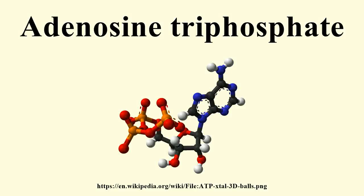Adenosine triphosphate is a nucleoside triphosphate used in cells as a coenzyme, often called the molecular unit of currency of intracellular energy transfer. ATP transports chemical energy within cells for metabolism. It is one of the end products of photophosphorylation, cellular respiration, and fermentation, and used by enzymes and structural proteins in many cellular processes.